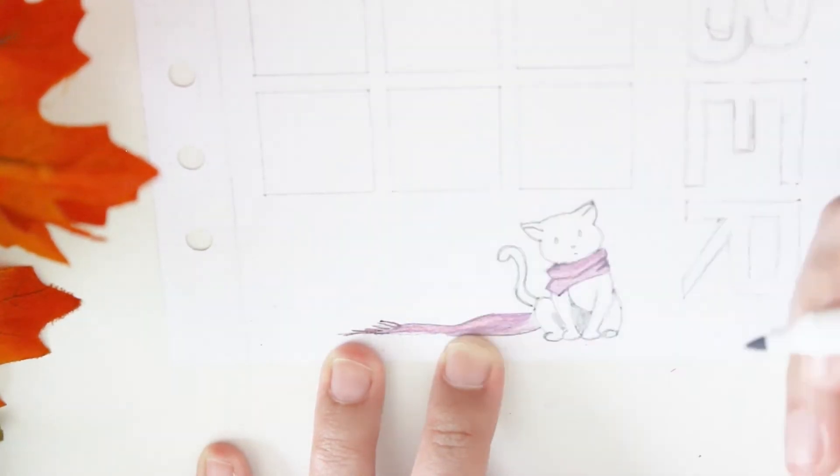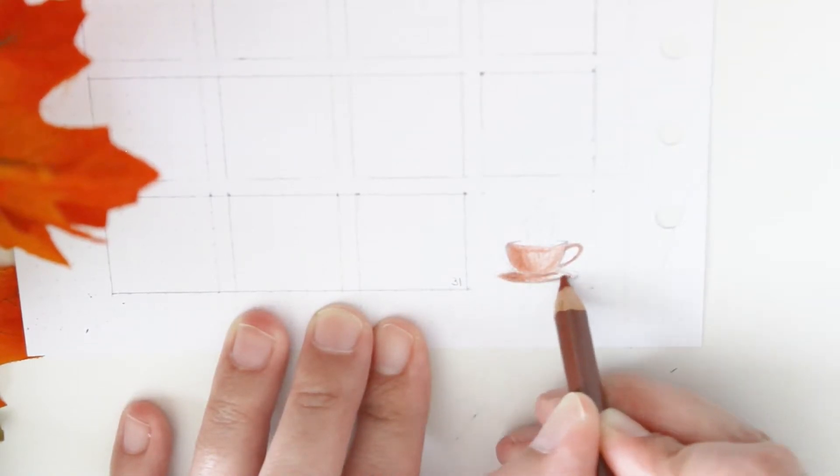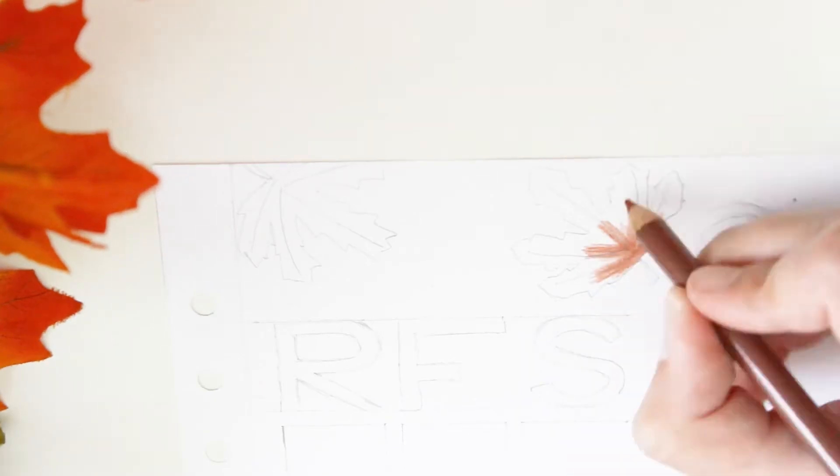This is a gray midliner because Crayola gray apparently is really dark compared to the midliner gray, and I really wanted a light gray color.